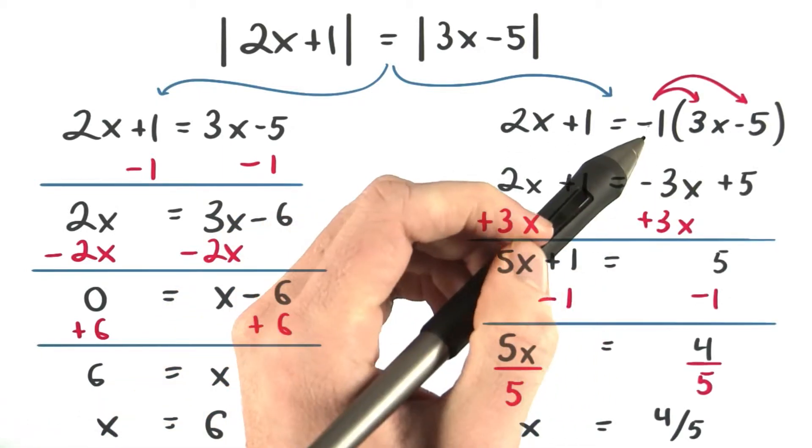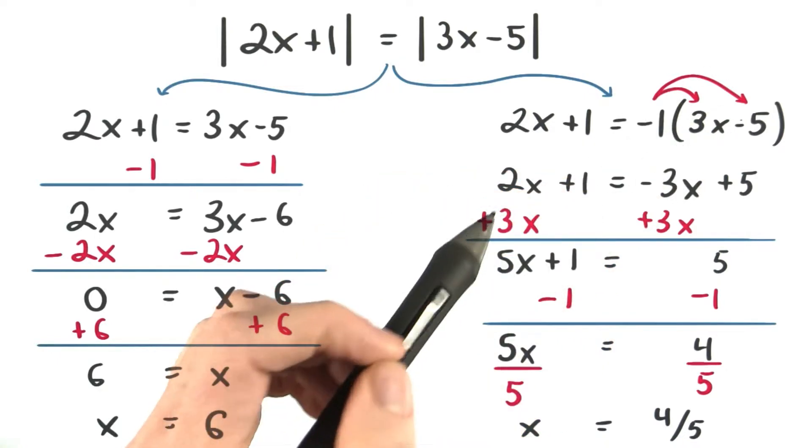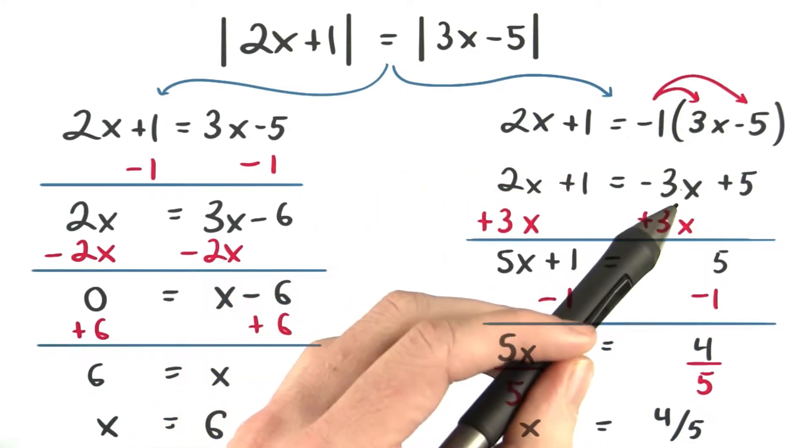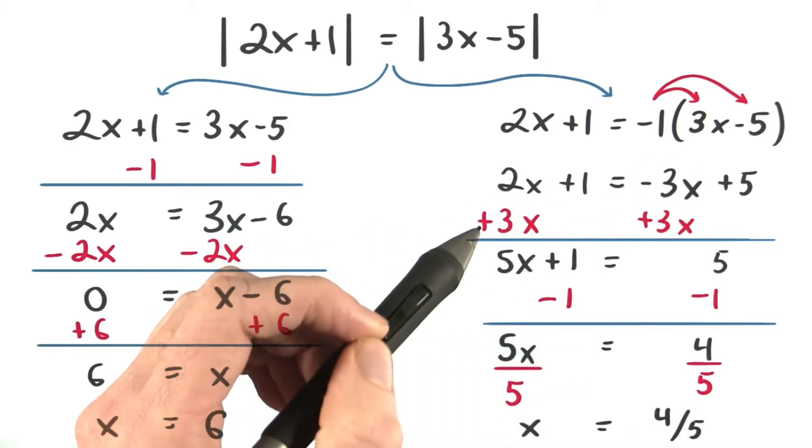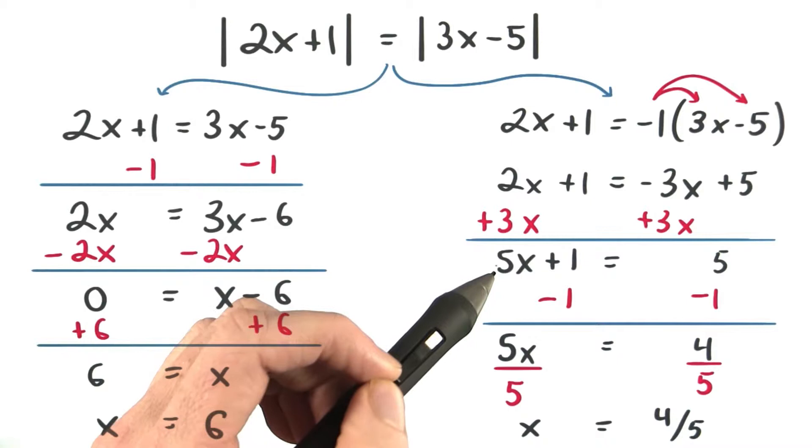For the right equation, we want to distribute the negative 1 first. So we'll have 2x plus 1 equals negative 3x plus 5. I'm going to move my x terms to one side by adding 3x. This also gives me a positive x variable on the left.